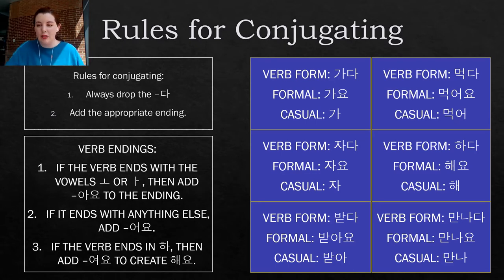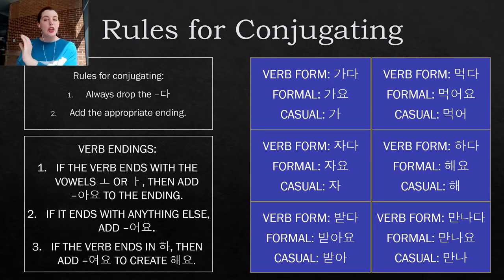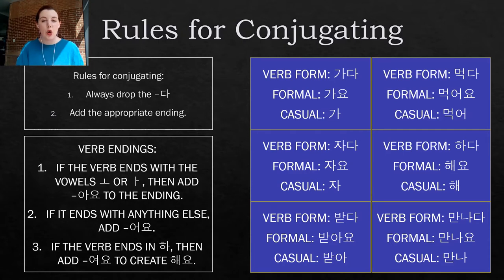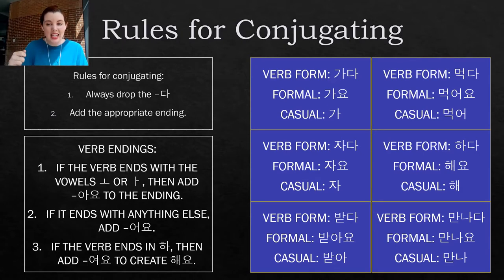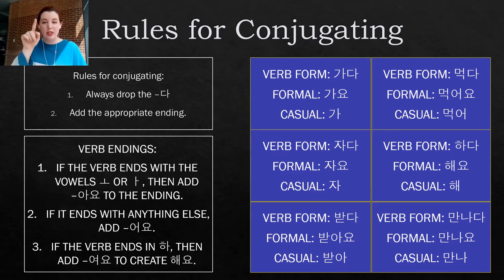On the right side I left a couple examples. There's 가다 — we remove 다 first, and then it would be 가 + 아요, but since it's just repetition, we shorten that for ease of pronunciation to 가요. The casual form is just 가, if you're speaking to someone younger than you, a child, or a friend the same age. Then we have 먹다, which means to eat — you remove 다 and add 어요. Because the last vowel in 먹 is O, we add 어요, so 먹어요 means eat, and 먹어 is the casual form.